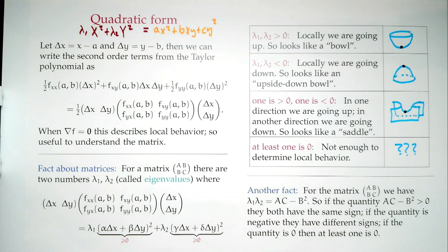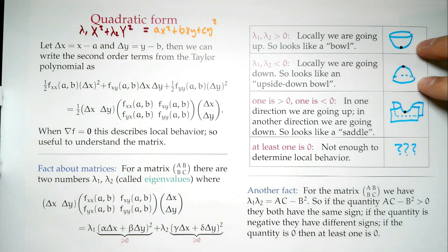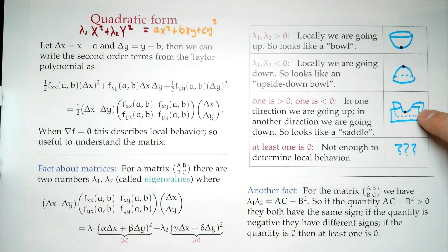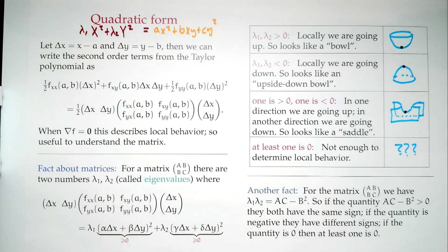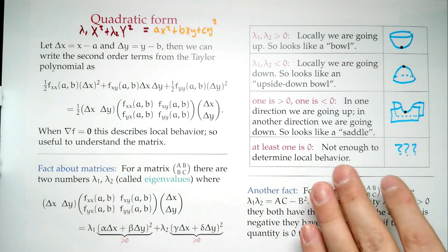What are the possibilities? If they have the same sign — both positive or both negative — you have a bowl shape locally. If they have opposite signs, you have a saddle shape locally. If one of them is zero, which means you get zero, all bets are off. So: positive product → bowl, negative product → saddle, zero → I don't know.